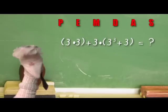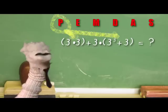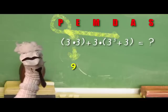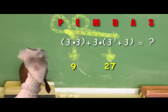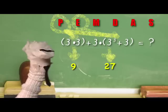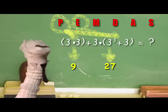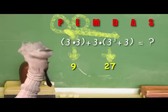So first we do the parenthesis. 3 times 3 equals 9. 3 to the third power, or 3 times 3 times 3, equals 27. And then we add another 3.